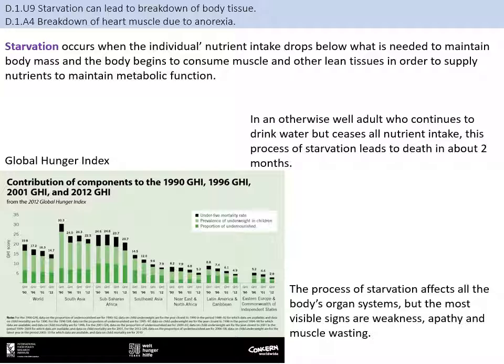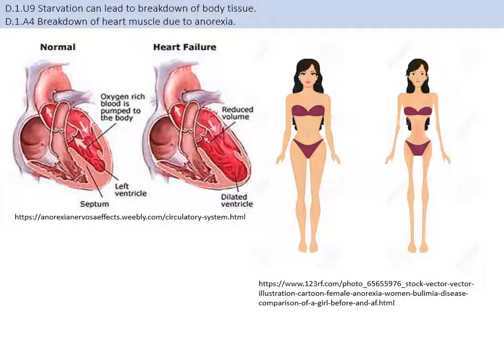A relatively healthy person entering starvation might not die for about two months because the body uses stored energy and nutrition until it can no longer maintain critical systems like the circulatory, nervous, and respiratory systems, ultimately leading to organ failure and death. In starvation, non-essential body systems — like skeletal muscle and bone — start to degrade to preserve the heart, lungs, and brain for as long as possible.